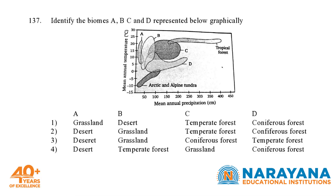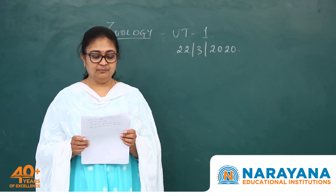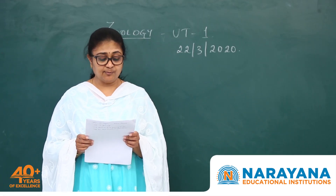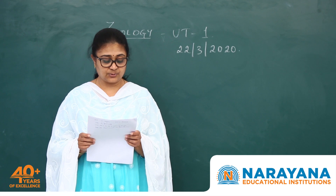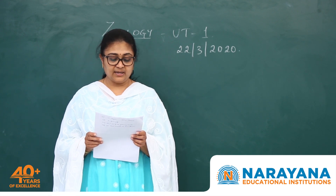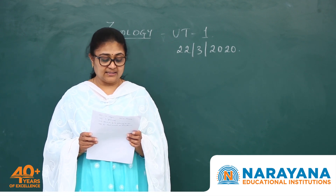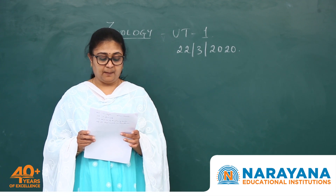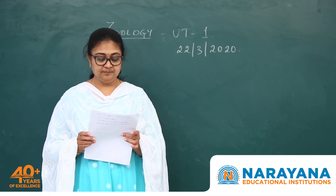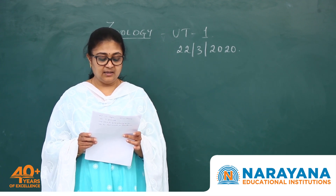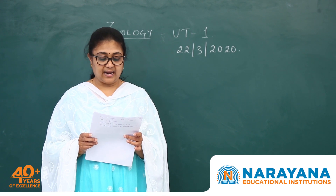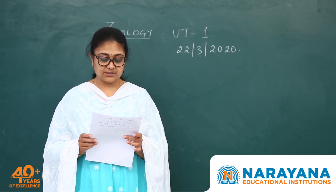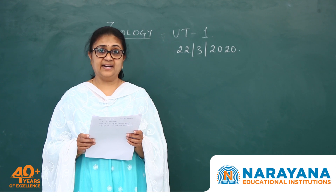In question 137, we have to identify the different biomes A, B, C, and D marked in the diagram. This is directly a question from the diagram given in the NCERT textbook class 12. We can see that A is a desert biome, B is a grassland, C is a temperate forest, and D is a coniferous forest. So the second option correctly matches.